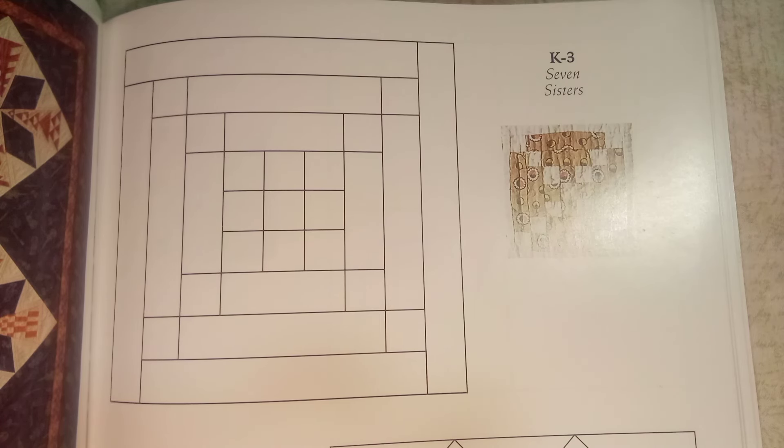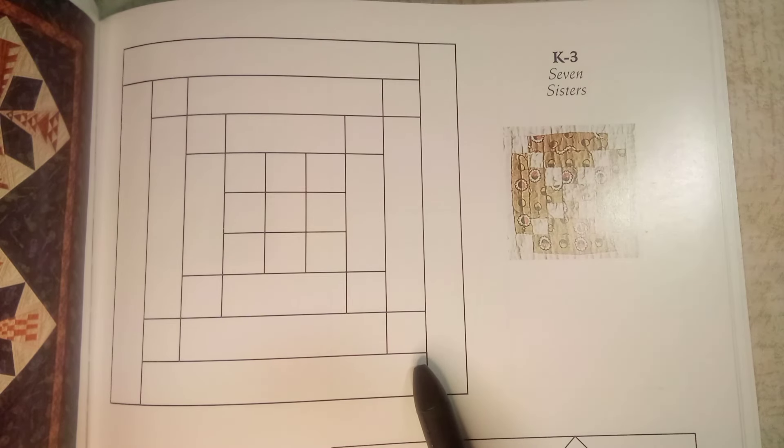Now this block is actually going to be relatively simple, like the first two blocks in the K row. But this one is just a matter of getting the right measurements. Each of these little squares within this block measure half an inch.